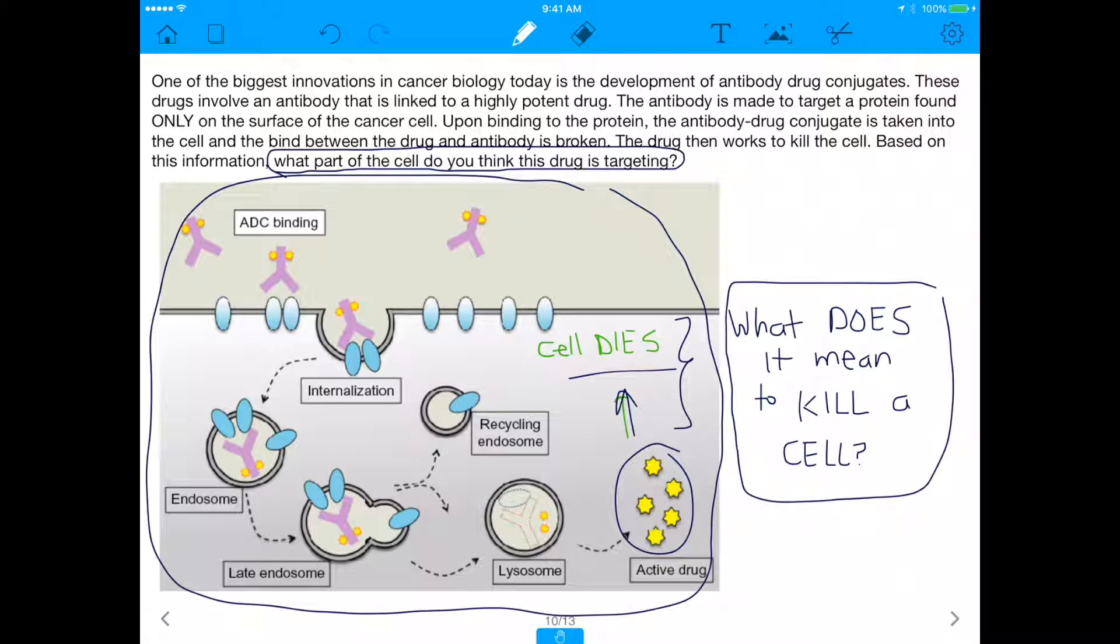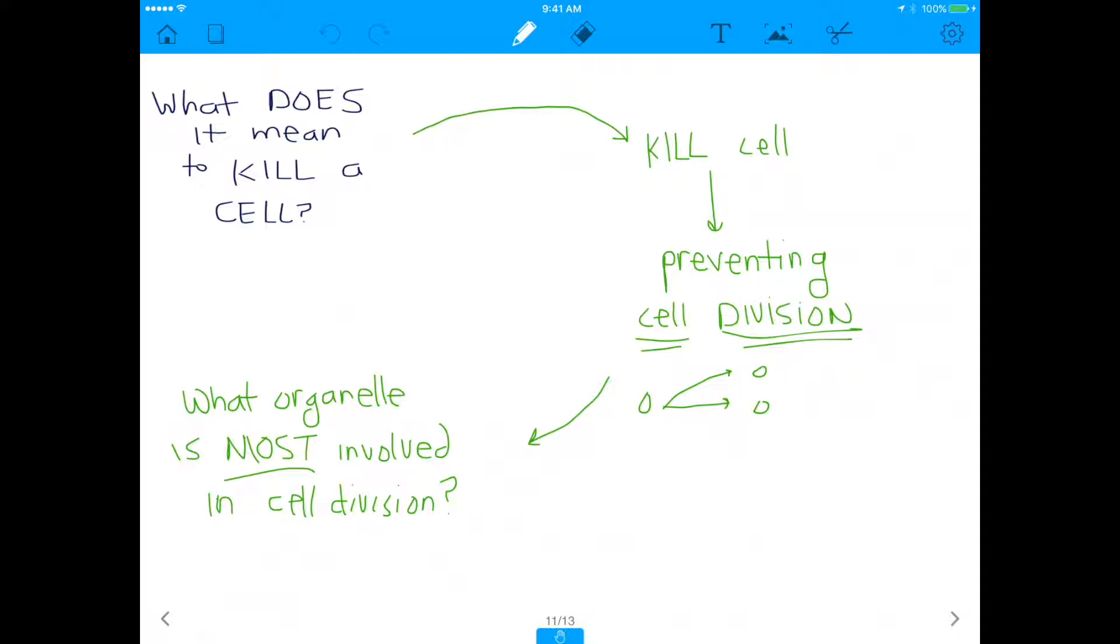If we want to know what part the drug is targeting, we need to really understand what does it mean to kill a cell. When we kill a cell, a cell dies, but what does it mean that it dies? Well, the biggest thing that killing a cell means is that you prevent cell division, right? Because if you kill a cell, that means one cell cannot make two cells. The cell ends up just dying instead. That process is obviously known as apoptosis, but this is more of like the cell actually just dying on its own. So ultimately the question is asking us: the cell dies, which means it's preventing cell division. So the question is actually saying what organelle is most involved in cell division?